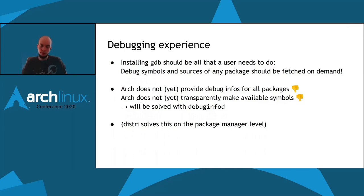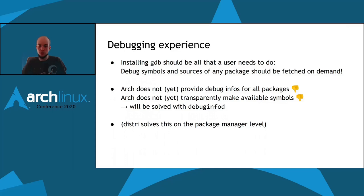Imagine your mail client or browser just crashes. You should be able to, without having to install or identify any other debug packages, just generate a backtrace. Arch does not yet provide debug info for all packages, nor does it transparently make these debug symbols available. Luckily, this specific debugging use case will be solved using debuginfod, a distribution-agnostic debugging information daemon. In DISTRI, this is solved at the package manager level, meaning the same experience also works for other use cases — for example, you could install packages that provide binary programs on demand.